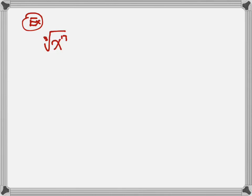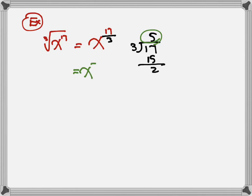Another example: cube root of x¹⁷. Since it's a cube root, we divide by 3. Using long division: 17÷3 = 5 remainder 2. The quotient 5 tells you x⁵ goes out, and the remainder 2 tells you x² stays inside. Don't forget the little 3, so the answer is x⁵ · ∛(x²). That's how you convert from radical to exponential form.